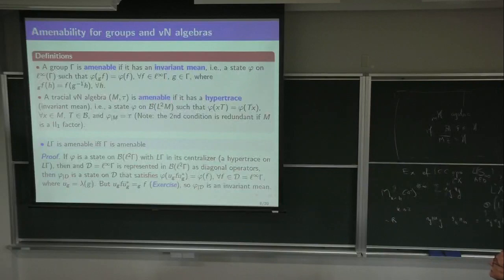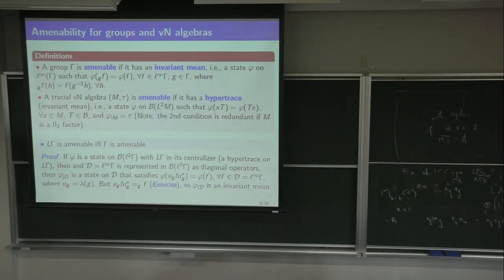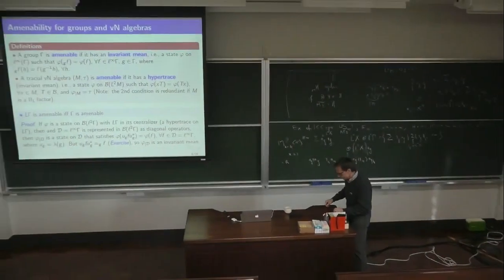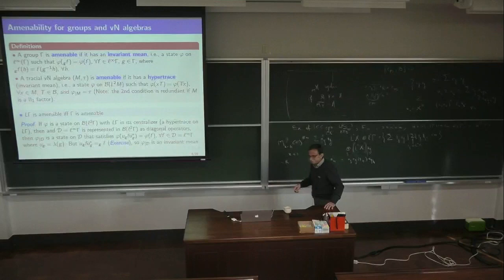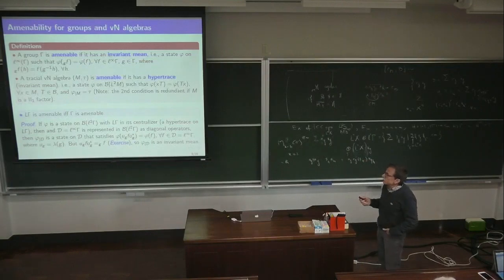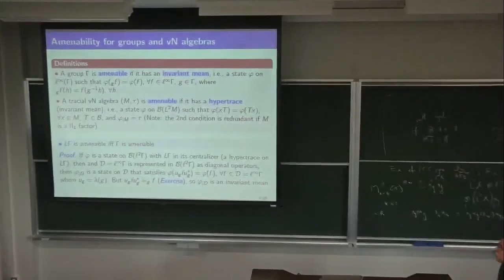I'll remind you what amenability is for groups. The reason I'll do it for groups is that I'll give a proof for groups, because that will be the template for proving similar results for von Neumann algebras. The scope will be to prove Connes' theorem that all amenable II₁ factors are isomorphic to R.